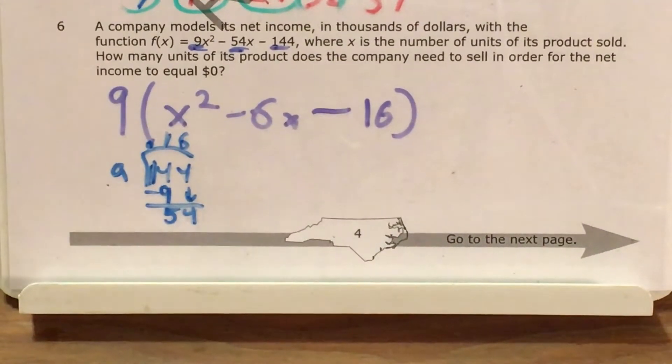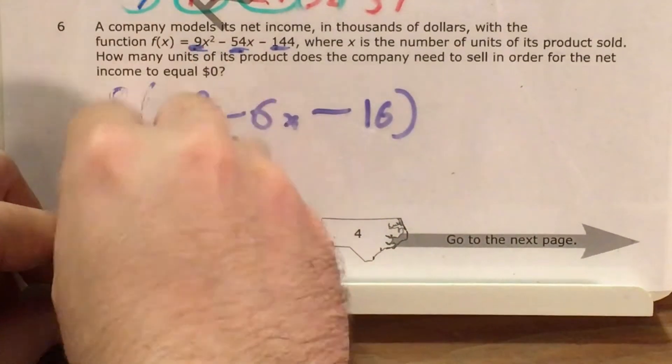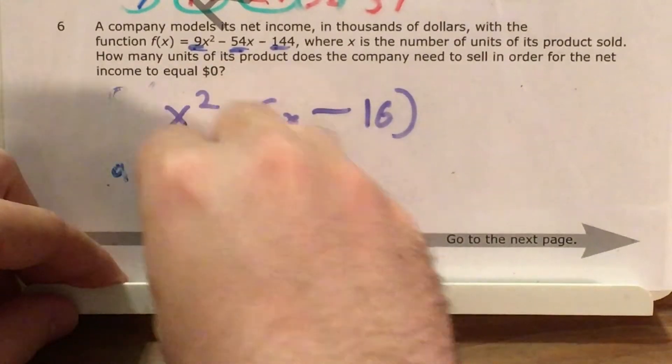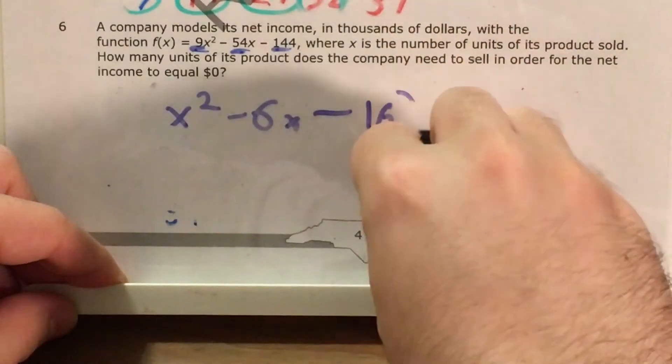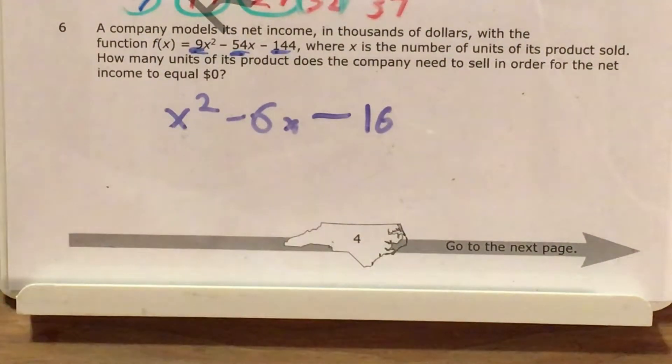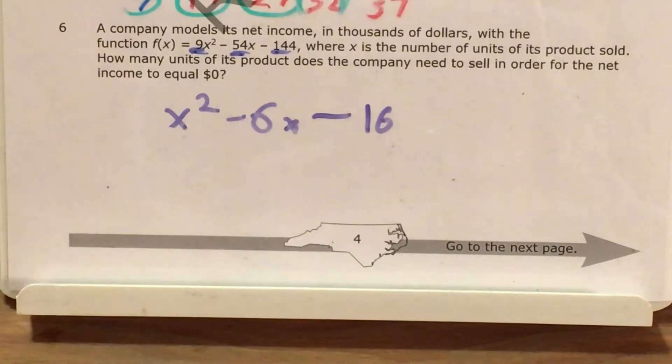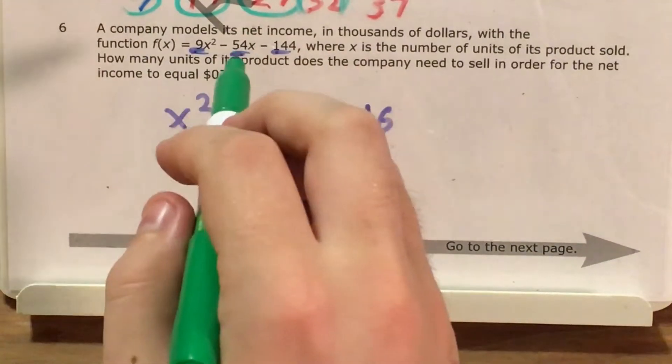So minus 144 becomes minus 16 once we pull the 9 out from that. And now I'm going to do something that is going to make this problem a lot easier, and it is only slightly cheating in mathematical terms. Because if we're going to figure out the solutions to this and want it equals 0, we actually don't need any of this stuff. So by factoring out this 9 and actually dividing each of my terms, each of my coefficients, by 9, I've narrowed this down to a function with some much easier numbers to work with.